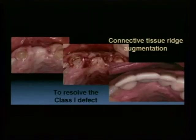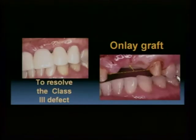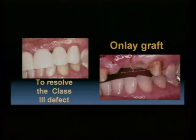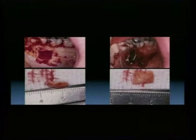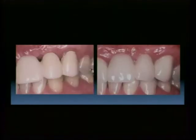The class three alveolar ridge deficiency with a two-tooth span is handled much in the same way — primarily dealing with the horizontal ridge deficiency with connective tissue, and secondarily coming back once we have handled the buccal ridge deficiency, dealing with the vertical component with a soft tissue-only graft.